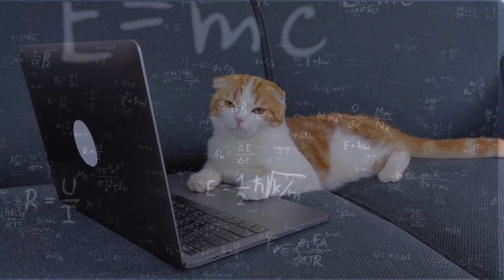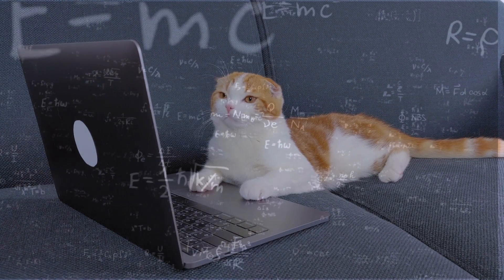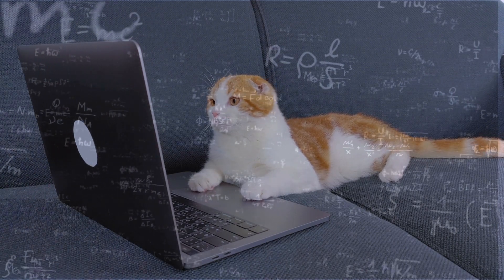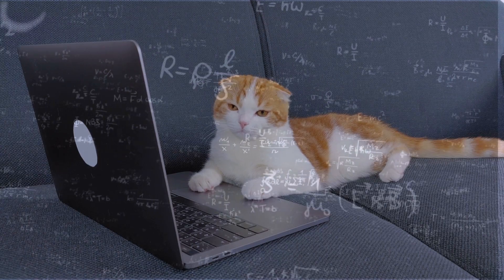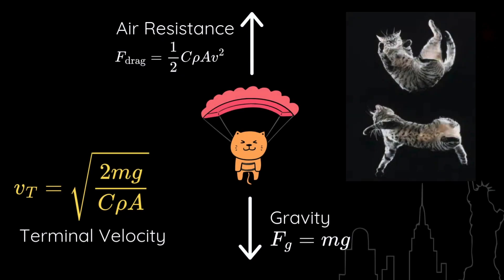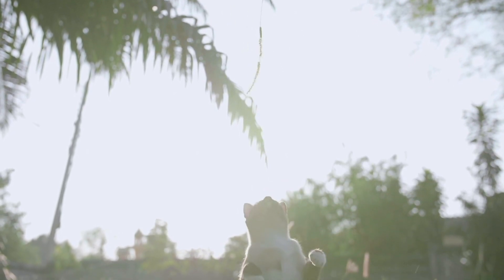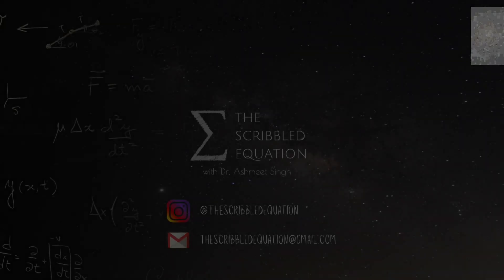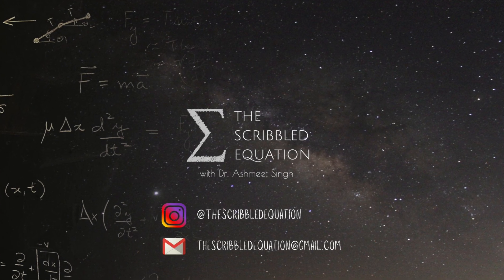So what did we learn today? Cats might just be nature's accidental physicists, turning instinct into survival by mastering air resistance, terminal velocity, and angular momentum—all without ever opening a textbook. But let's be very clear: this isn't an invitation for your feline friend to audition as a stunt double. Keep those windows closed, those balconies secured, and your cats grounded—literally. Stay curious, keep scribbling, and I'll see you next time.